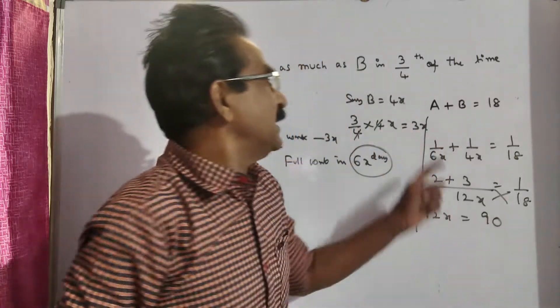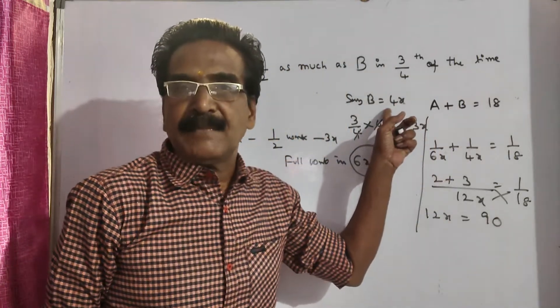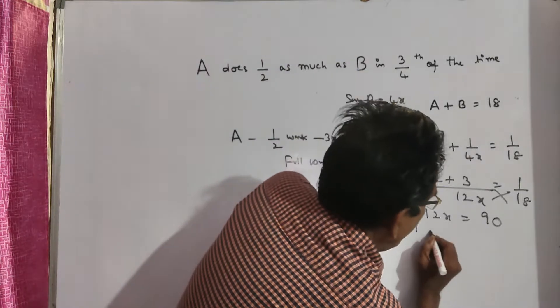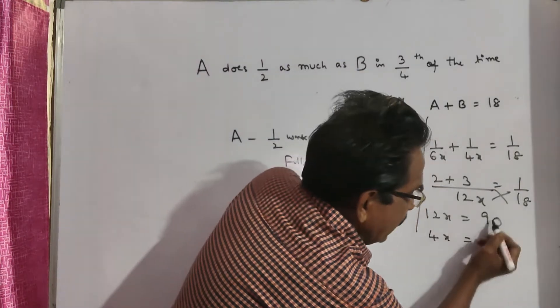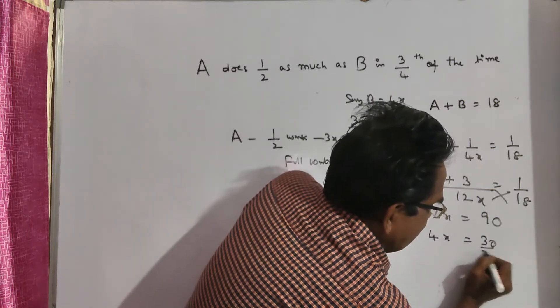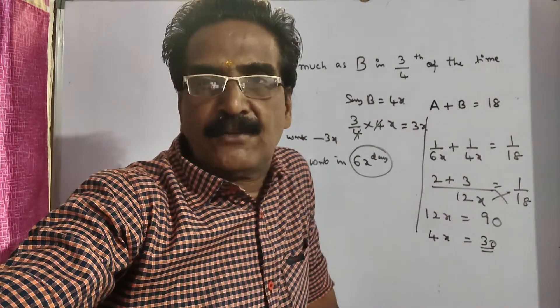We want B's time, we want 4x. 4x is equal to 2 plus 4x by 3. 4x, 90 by 3, 30. Thirty days friends. Okay friends, thank you, have a nice day.